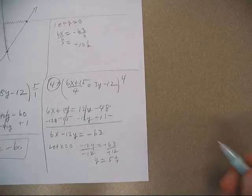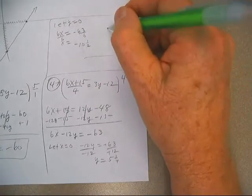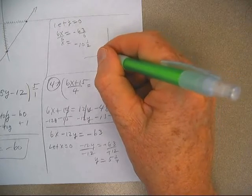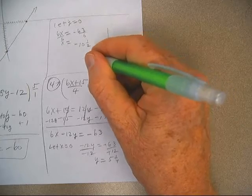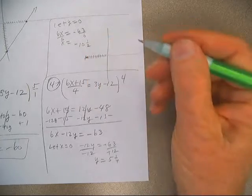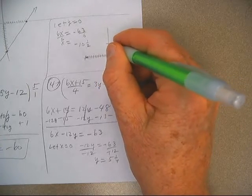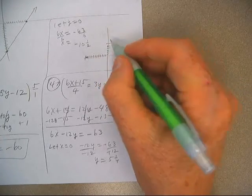And then let's graph these two. I can sandwich my graph right here. x is negative 10 and a half. 1, 2, 3, 4, 5, 6, 7, 8, 9, 10, 11. So I'm right there. And y is 5 and a fourth. 1, 2, 3, 4, 5, 6. 5 and a fourth's about there.